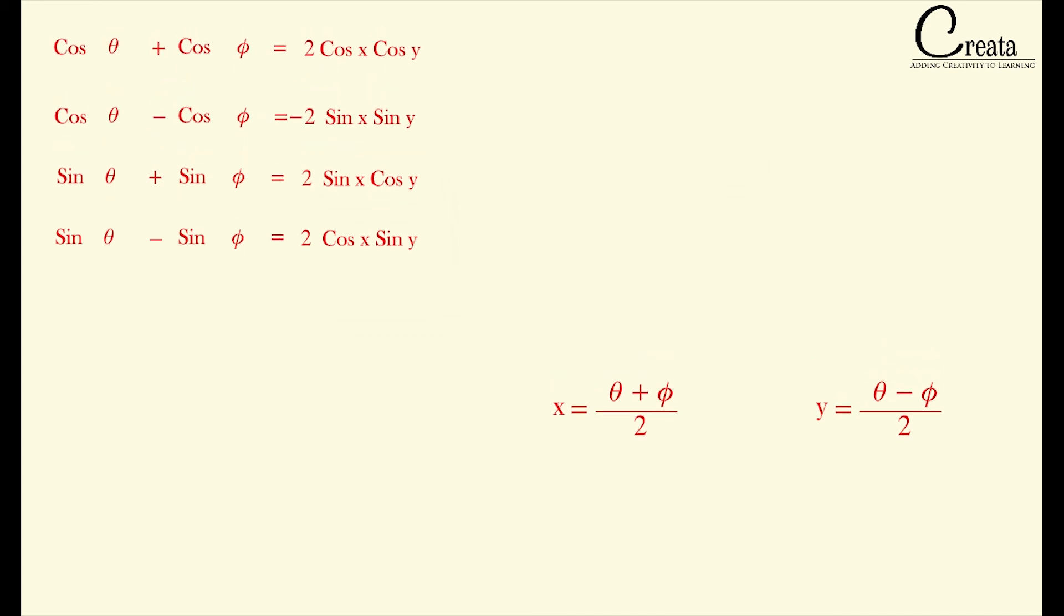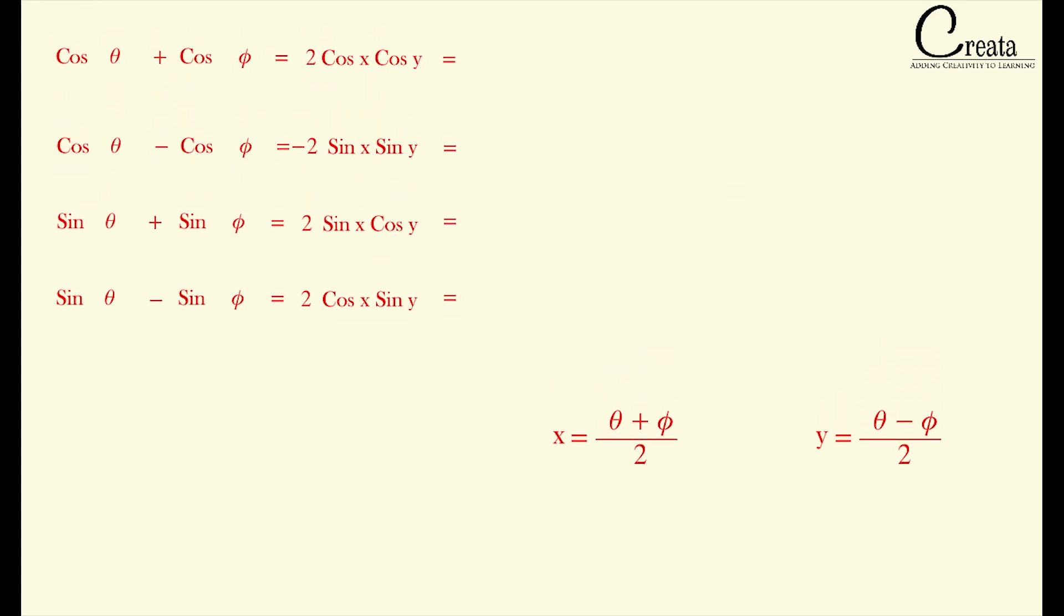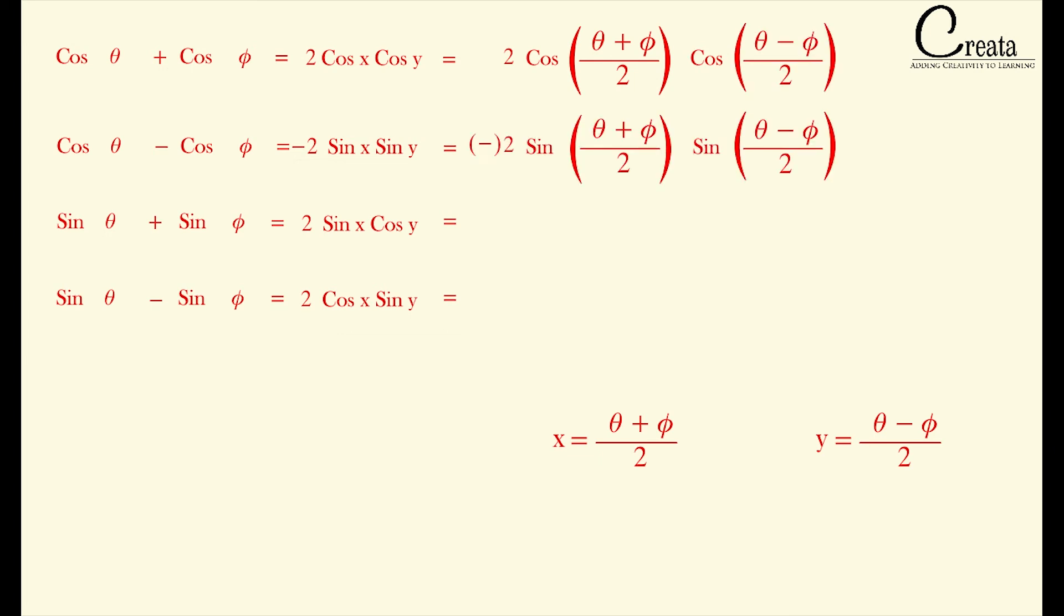We got our final result as cos theta plus cos phi is equal to 2 times cos((theta plus phi) upon 2) into cos((theta minus phi) upon 2). And similarly, our cos theta minus cos phi, sin theta plus sin phi, and sin theta minus sin phi. All the four equations, we will get our output.